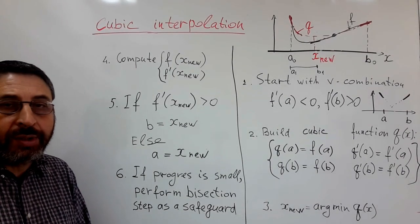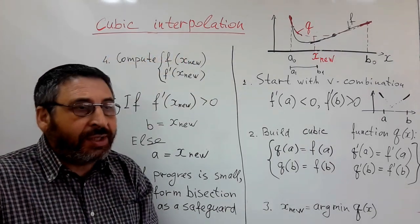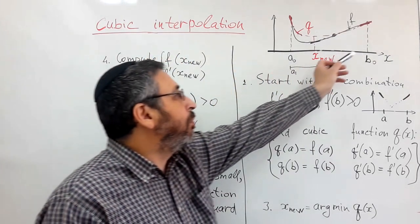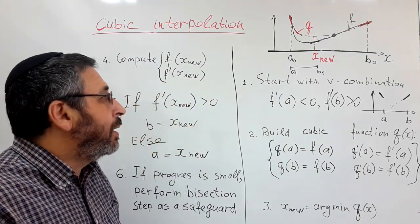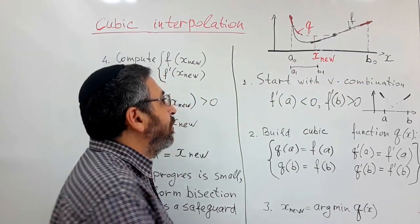Now we will talk about cubic interpolation method for finding minimum of a function of one variable. As usual, we will start with a function given on an interval.